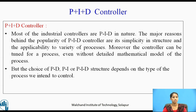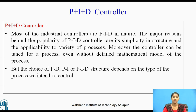Most industrial controllers are PID in nature. The major reasons behind the popularity of the PID controller are its simplicity in structure and its applicability to a variety of processes. Moreover, the controller can be tuned for a process even without a detailed mathematical model of the process. The choice of PD, PI, or PID structure depends on the type of process we intend to control.